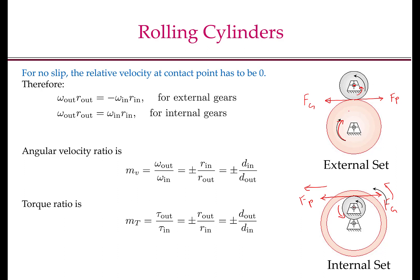For external cylinders or external gears, the two shafts rotate opposite to each other, and since the relative velocity at the contact point has to be zero: ω_out × R_out = −ω_in × R_in. Here ω_out is the velocity of the output shaft, R_out is the radius of the output cylinder, ω_in is the velocity of the input shaft, and R_in is the radius of the input cylinder. For internal gears, ω_out × R_out = ω_in × R_in because the two shafts rotate in the same direction.